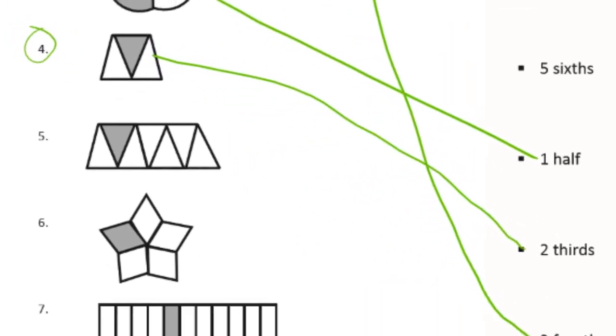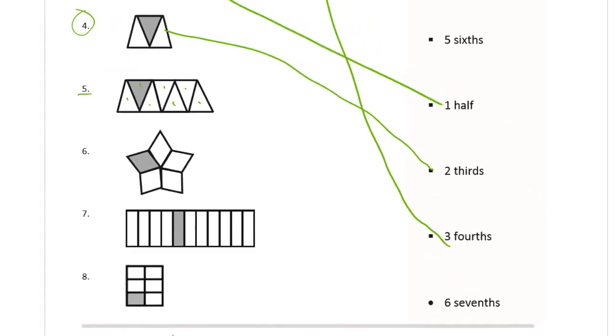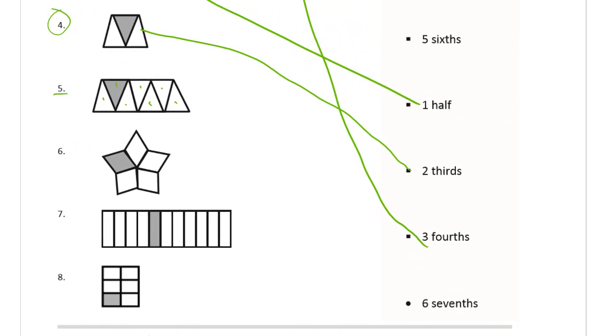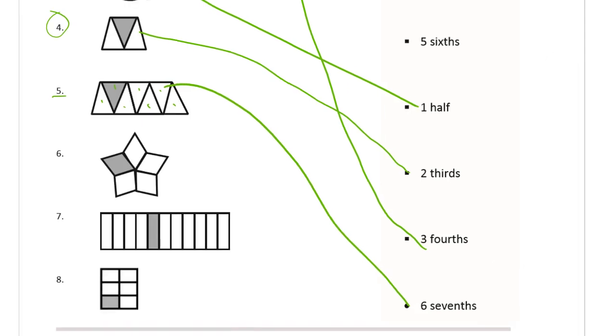I'll zoom in for this next one. Number 5. There's 1, 2, 3, 4, 5, 6, 7 equal parts, and one of them is shaded in. So that's 1 seventh. That means there are 6 sevenths not shaded in. Look for 6 sevenths—it's down here at the bottom. Match that up.